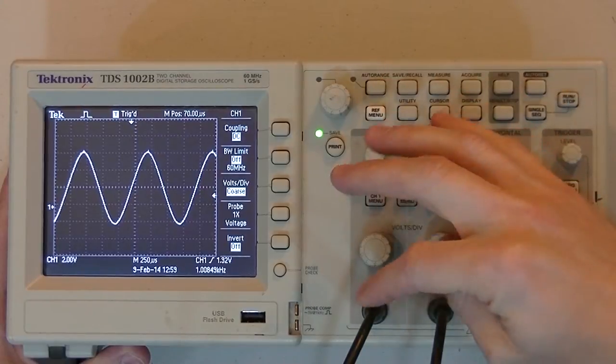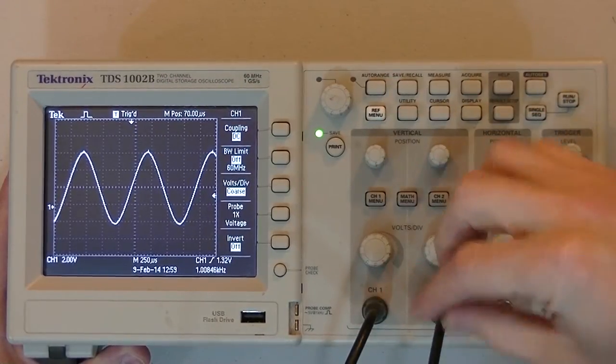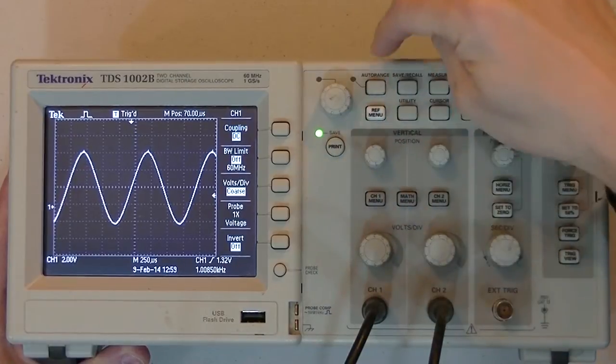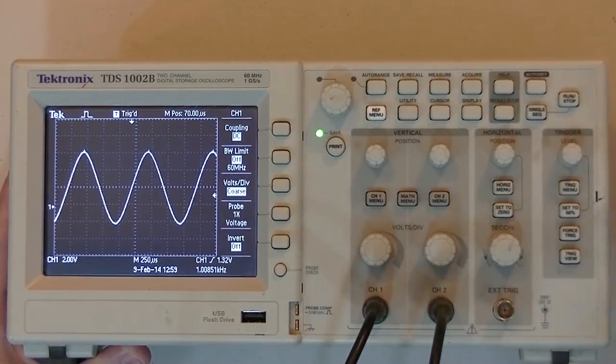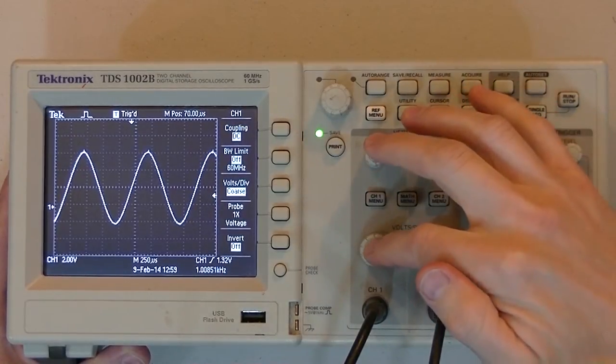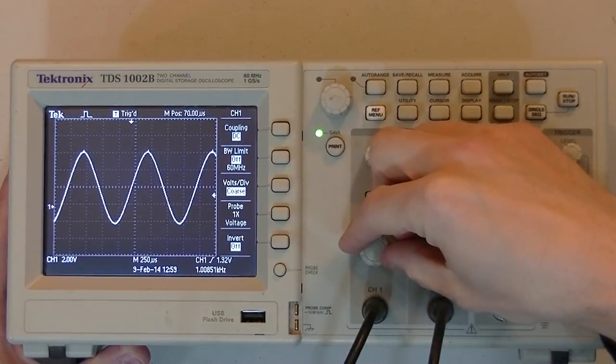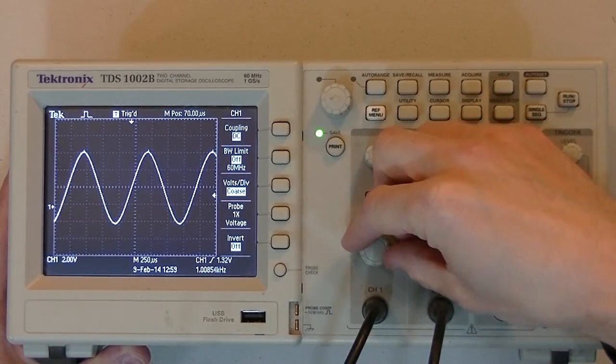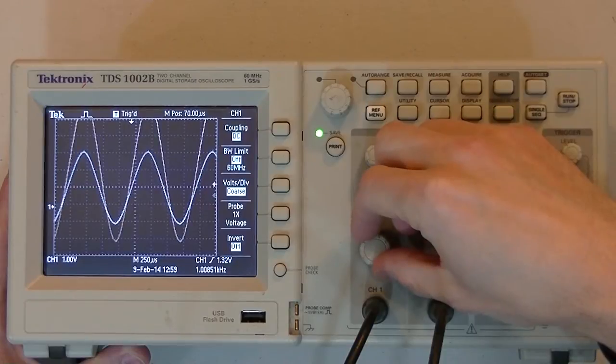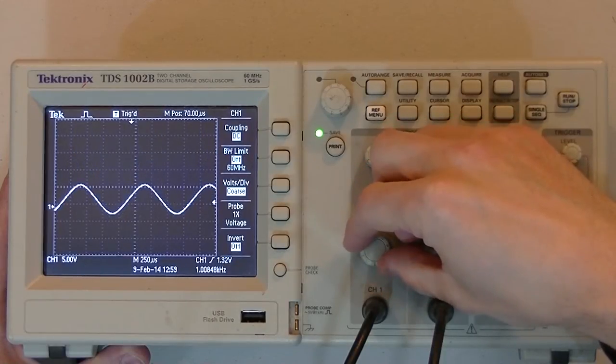So let's look at the controls that you'll typically use when working with an oscilloscope. Right here is channel 1. Here is channel 2. In a line up from channel 1, you'll usually have a control that allows you to adjust the volts per division.